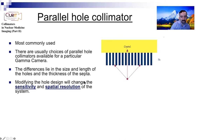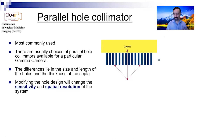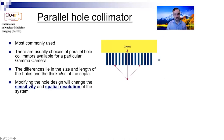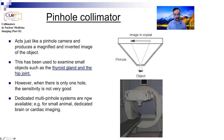The parallel hole collimator has been the most commonly used type of collimator, and there are different choices of it - low energy general purpose, low energy high resolution, mid energy, and high energy. The differences lie in the size and length of the holes and the thickness of the septum, which we talked about last time.